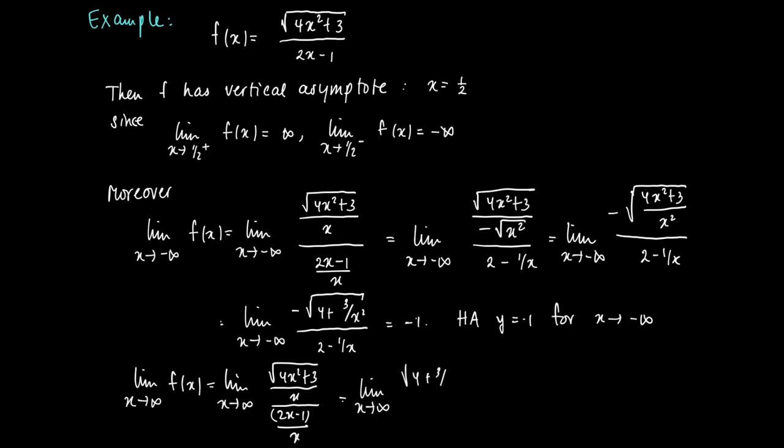We don't need to adjust for the minus sign. We get the limit as x approaches infinity of √(4 + 3/x²), which goes to √4, divided by (2 - 1/x), which goes to 2. So we get a limit of 1. We have a horizontal asymptote y = 1 for x going to infinity.